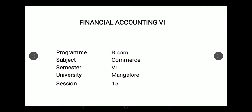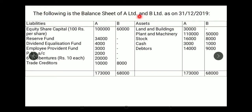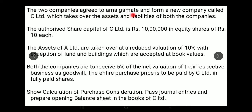Hello dear students, this is session 15 of Financial Accounting 6. In this video I'm going to explain Section B, Problem 1. Following is the balance sheet of A Limited and B Limited on 31st December 2019. Two companies agree to amalgamate and form a new company called C Limited. C Limited will take over the assets and liabilities of both A and B.